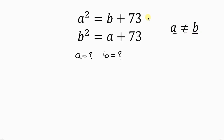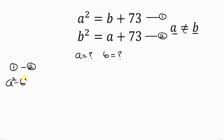We can call this equation 1 and call this equation 2. Now let's subtract equation 2 from equation 1. So, a squared minus b squared is equal to b minus a. Note that 73 minus 73 is 0, so no need to write that.